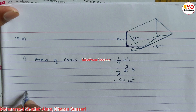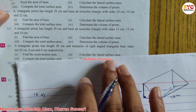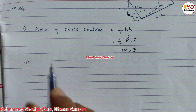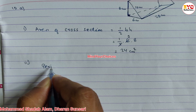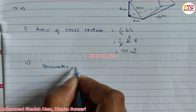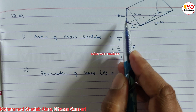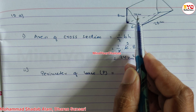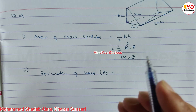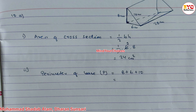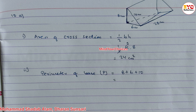Now in number 2, we have to find out the lateral surface area. The formula for lateral surface area is P into H — perimeter of base into height. Perimeter of base P is equal to sum of all sides. The triangle has three sides: 8, 6, and 10. So 8 plus 6 plus 10 equals 24 cm.